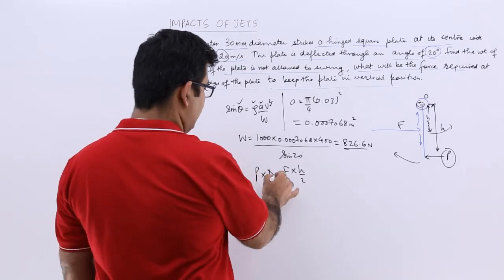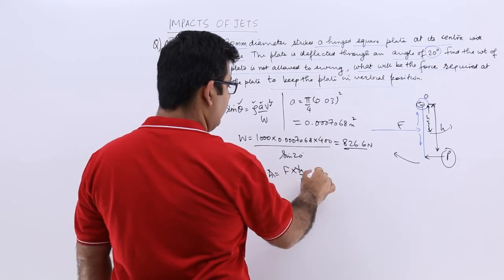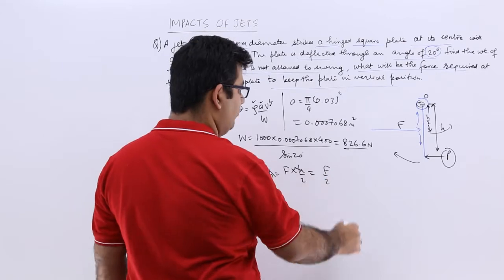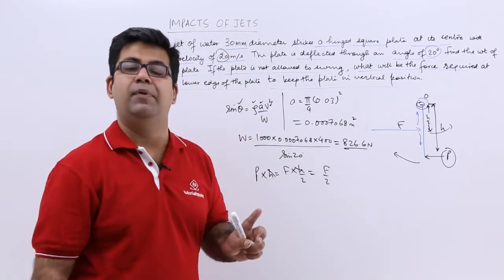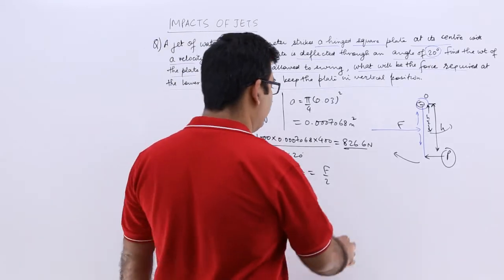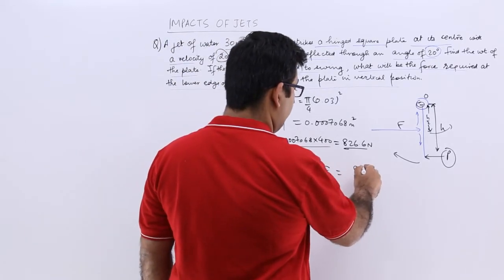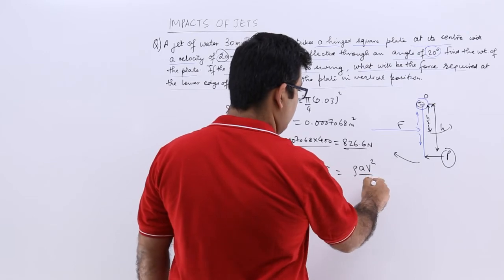H and h gets cancelled, so basically it becomes half of the force due to the jet of water. Now this becomes a case of a stationary vertical plate. In the case of stationary vertical plate, the force was rho av squared upon 2.